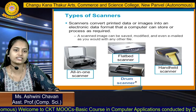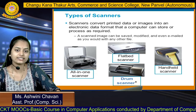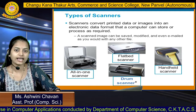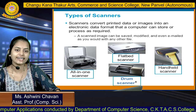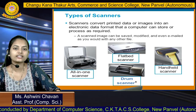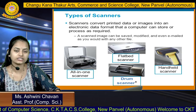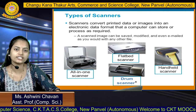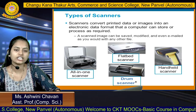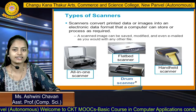In this figure, we can see various types of scanners like the all-in-one scanner, flatbed scanner, drum scanner, and handheld scanner, which is used to scan barcodes. Scanners convert printed data or images into electronic data format that a computer can store or process. The scanned data can be stored in the computer system and used whenever required. A scanned image can be saved, modified, and even emailed like any other kind of file.